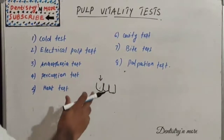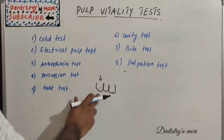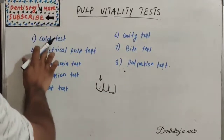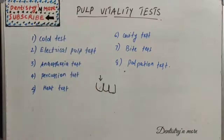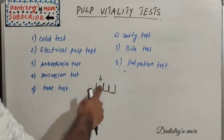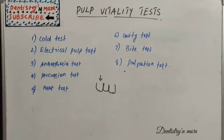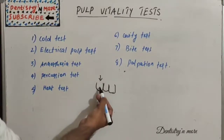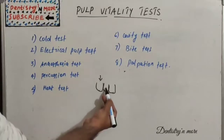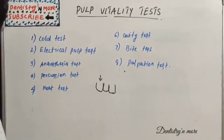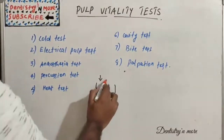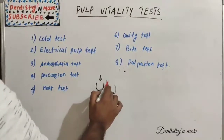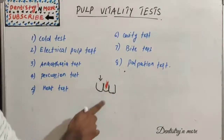All tests are different approaches to check whether the tooth is vital or not. For the cold test, we should always start from the adjacent tooth. If this is the tooth of interest, we start with the adjacent tooth so the patient can distinguish between the normal tooth and the abnormal tooth.